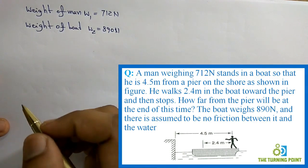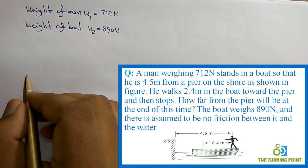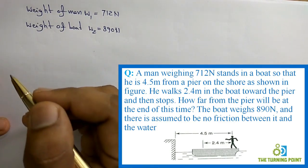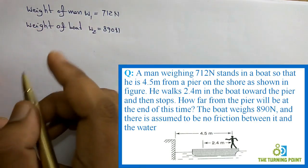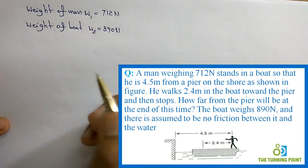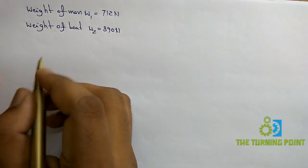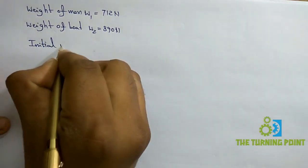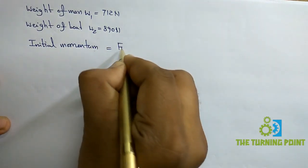The velocity of the man is not given directly, but we will use the law of conservation of momentum. According to this law, initial momentum equals final momentum. The initial momentum includes the man only, as the boat has no initial momentum. The final momentum includes both the man and the boat.